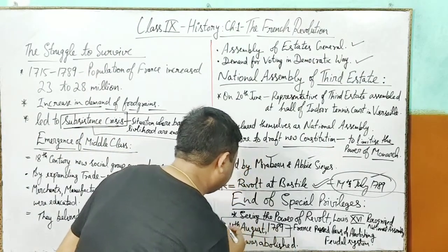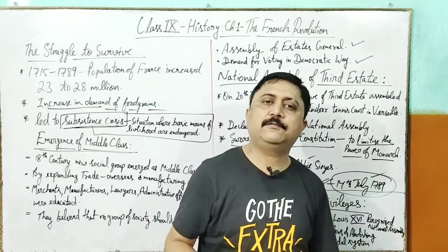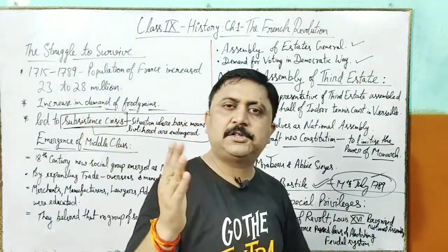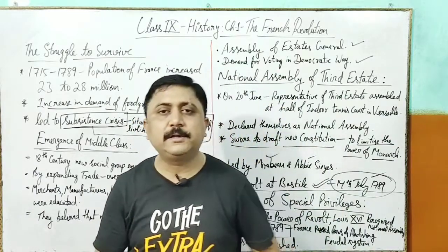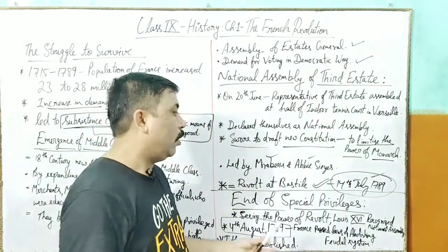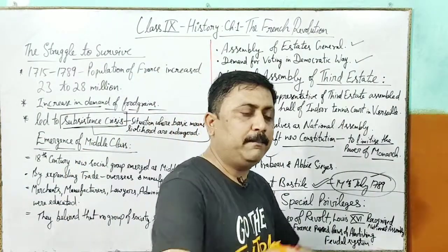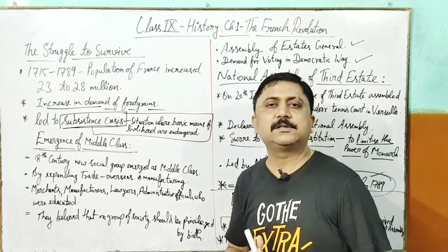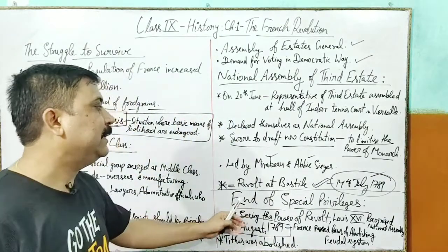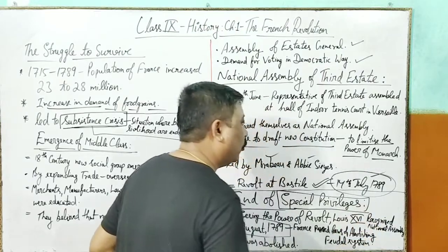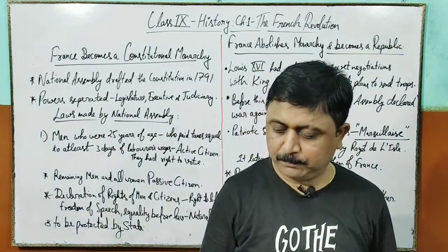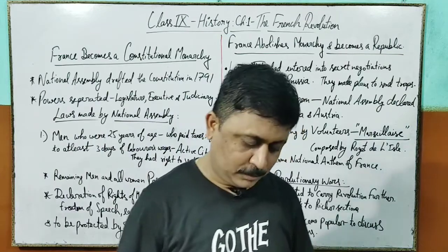On 4th August 1789, France passed laws of abolition of the feudal system. Is tarah ka feudal system jo chal raha tha use abolish karne ka kaam kar diya. Church ki property seize kar li gayi - church ke paas bahut properties hoti thin, aur woh bhi privileged class thi France mein. Unki property seize kar di gayi aur jo tithes tax tha use bhi abolish kar diya gaya. Poori tarah se jo system chal raha tha use abolish karna pada. King Louis 16 ko us letter par sign karna pada - jiske wajah se special privileges end ho gayi. So France becomes a constitutional monarchy.